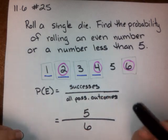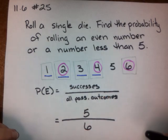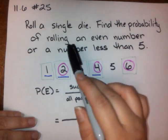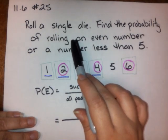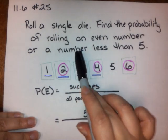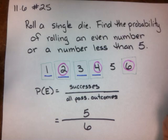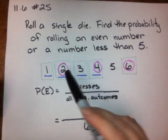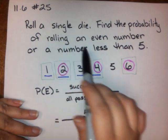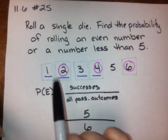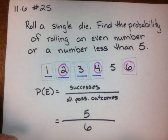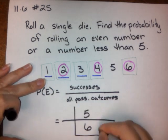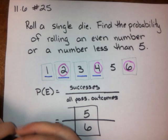You have to remember that sometimes when they ask these questions, things might fall into both categories — something before the 'or' and after the 'or' — and in that case you can only count it once. If you rolled a 2, you didn't get 2 successes; you only got 1 success. So the answer for this one is 5 over 6.